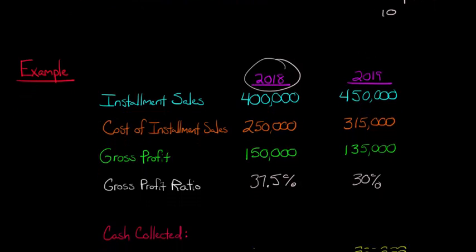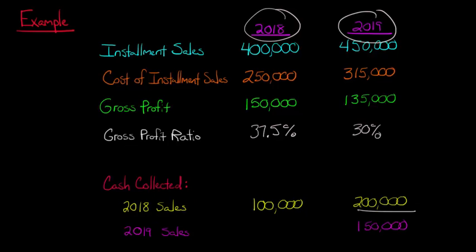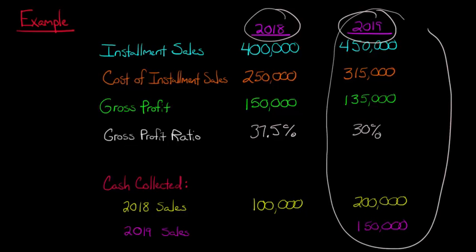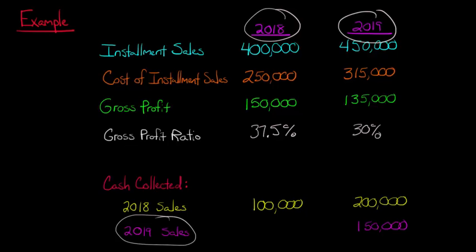Before we can start making journal entries, we need to know how much cash was collected in each period. In 2018, we made sales of $400,000 and collected $100,000 of those 2018 sales. Then in 2019, we collected $200,000 from 2018 sales and $150,000 from 2019 sales. The 2018 column for 2019 collections is blank because we obviously can't collect 2019 sales in 2018.